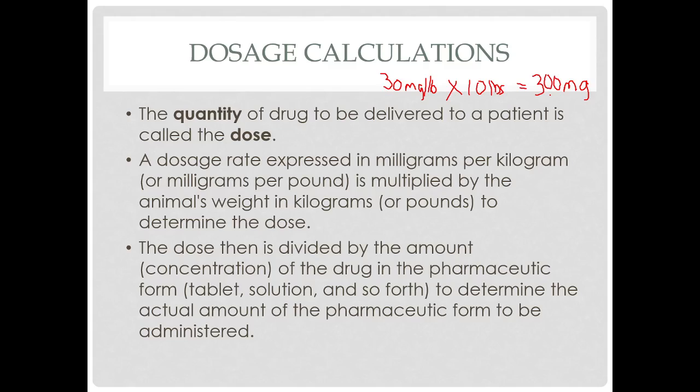300 mg is the dose this animal is going to get at this time. Now that's great. But what if the medication we're giving is a liquid? Let's say the liquid is two milligrams per mil. There are two milligrams of the medication in every milliliter that we give. That's the concentration.